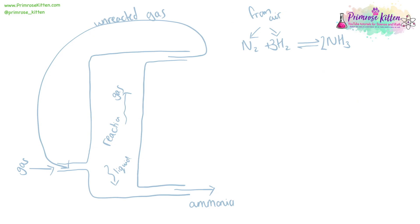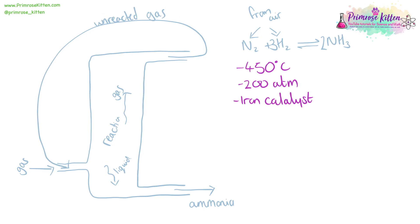The Haber process produces ammonia from nitrogen and hydrogen gas. Our main source of nitrogen is getting it from the air, and we can also get hydrogen gas from the electrolysis of water. They are fed into the reaction vessel where they are converted into ammonia, which is a liquid so it can be taken off at the bottom, and any unreacted gases go back round into the reaction. It is done at 450 degrees C, at 200 atmospheres, and using an iron catalyst. The production of ammonia is very important because it is a key source of nitrogen for fertilisers.